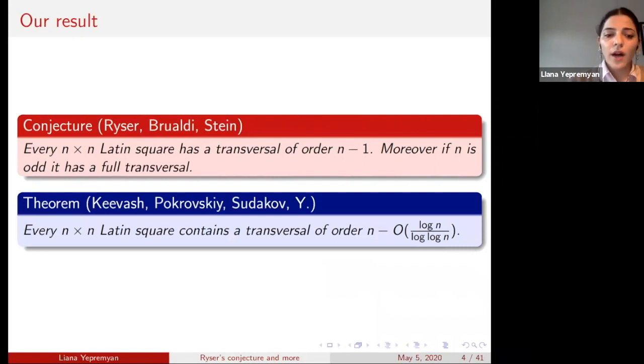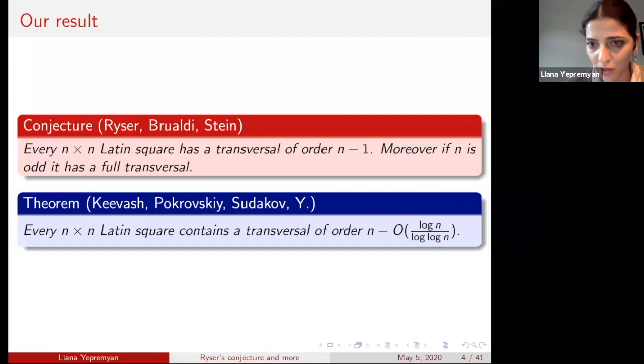What do we bring to this picture? We show that every Latin square of order n must have a transversal of order n minus O(log n / log log n). I will share the slides after the talk.